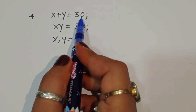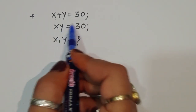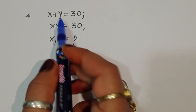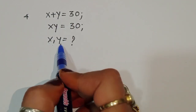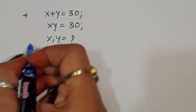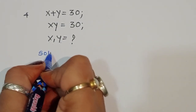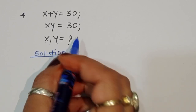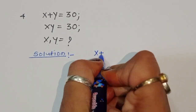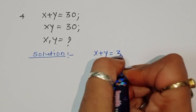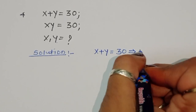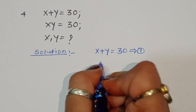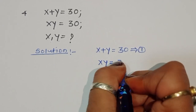We are given x plus y is equal to 30, and xy is equal to 30. We have to find out the value of x and y. The first equation is x plus y equals 30, and the second equation is xy equals 30.